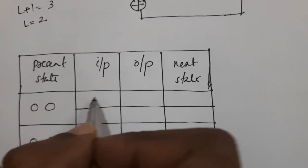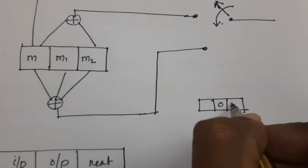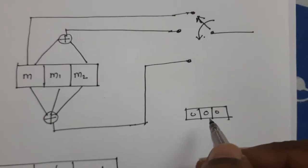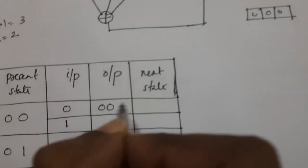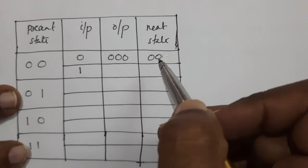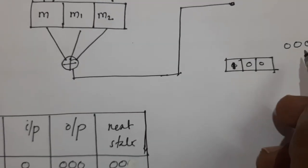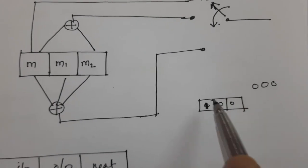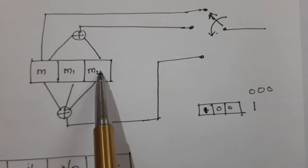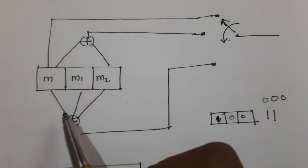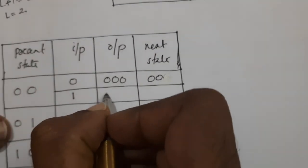With present state 00 and input 0, the output will be 0, 0, 0 and the next state will be 00. If the input is 1, the output is computed as: first bit is 1, second bit is 1 plus 0 equals 1, third bit is 1 plus 0 plus 0 equals 1. So output is 1, 1, 1.